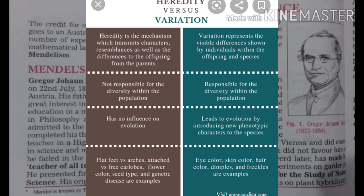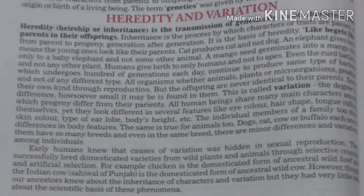In identical twins, no hereditary variation exists. Environmental variations are those which are merely due to the environment. The study of genetics enables us to differentiate between hereditary variation and environmental variation. While hereditary variations are transmitted from generation to generation, environmental variations are temporary and have nothing to do with the past or next generation. Hereditary variation within a progeny results from sexual reproduction.